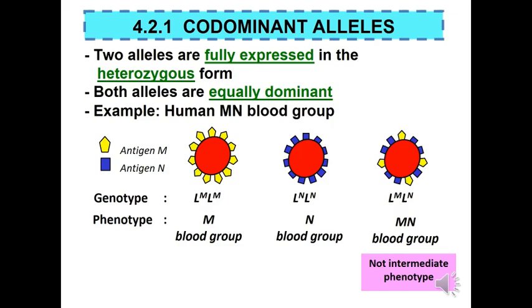Codominant alleles occur when two alleles are both fully expressed in the heterozygous form, because both alleles are equally dominant. For example, the human MN blood group. The allele producing antigen M is represented by capital letter L with superscript M, while capital letter L with superscript N refers to the allele that produces antigen N.